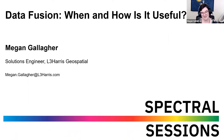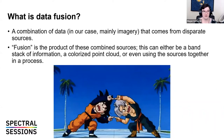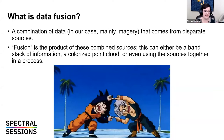First off, what is data fusion? Data fusion is a combination of data — in the case of Spectral Sessions, we're mainly talking about imagery data that comes from disparate sources: different kinds of sensors, different areas, different stations, different overlap, etc. Fusion is the product of these combined sources. There are a lot of different things this relates to, so I will talk about the most common ones, such as a band stack — having stacks of imagery of different kinds together that can be used for a classification.